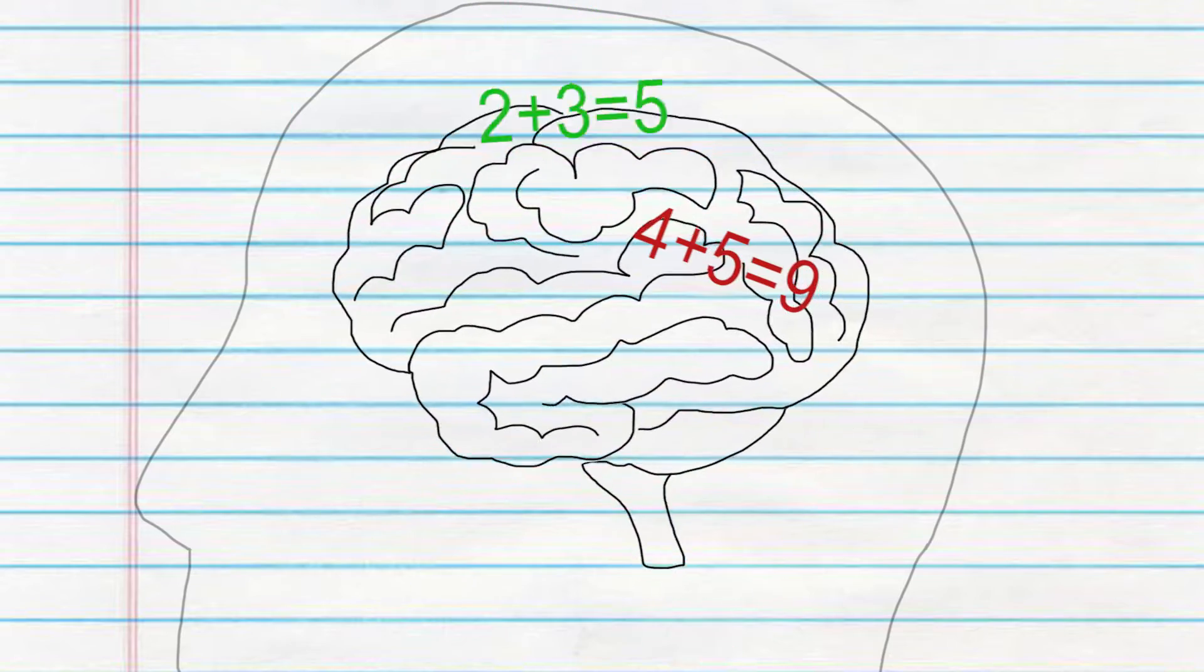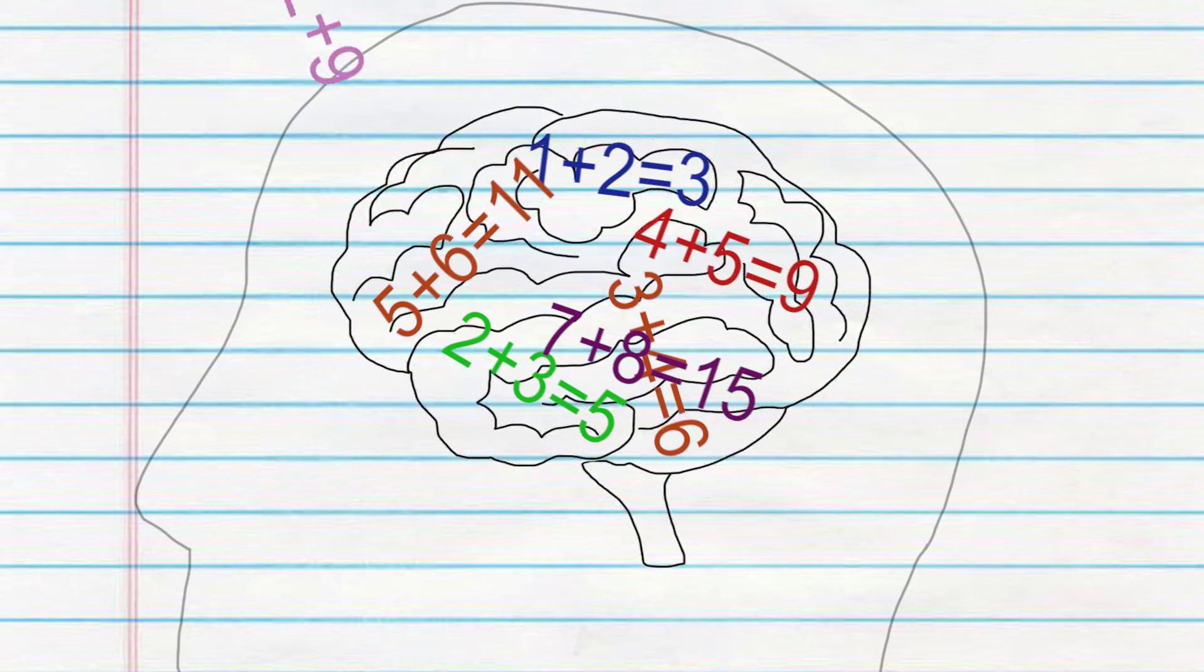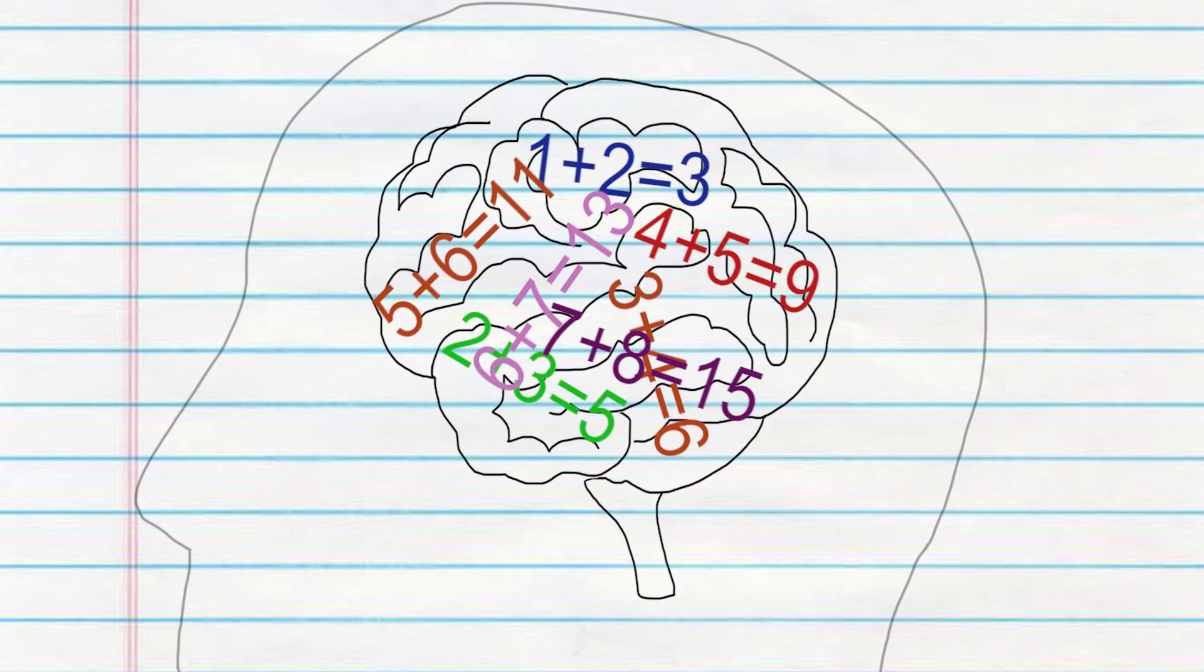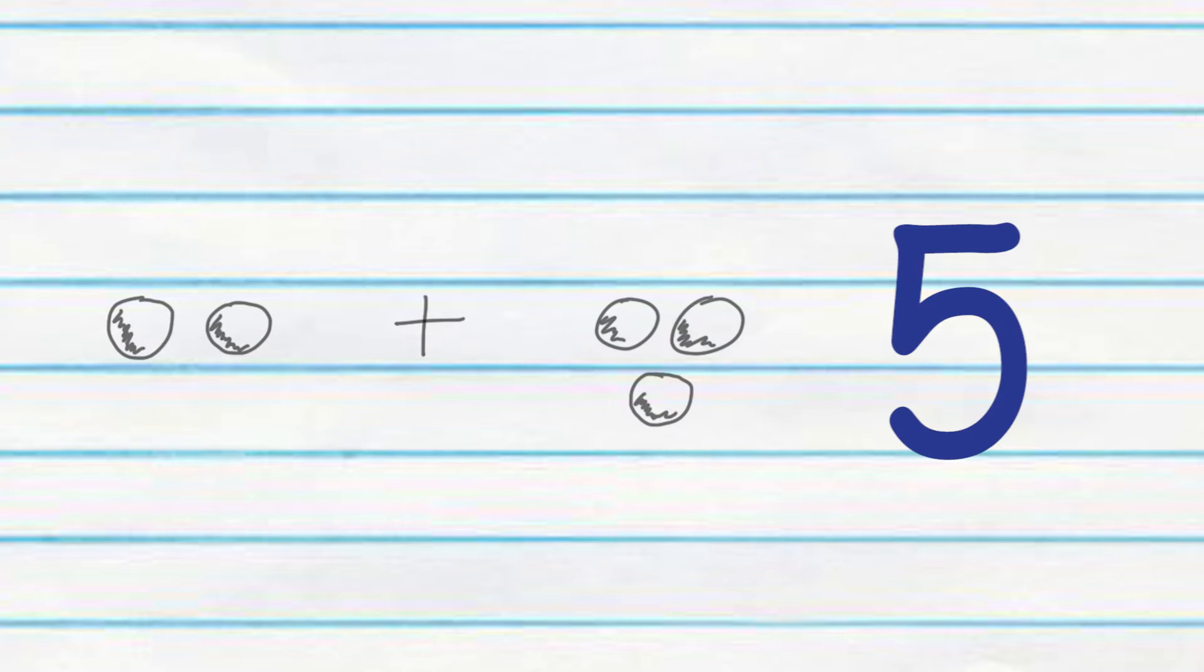You'll know a whole lot more than you did before by adding 1 to the double, you know. 2 plus 2 is 4. 2 plus 3 is just one more. 2 plus 3 is 5.